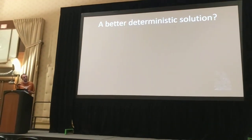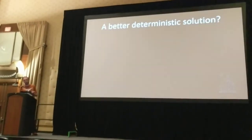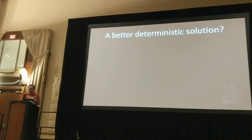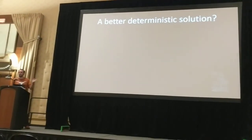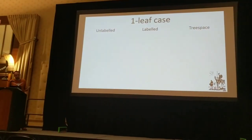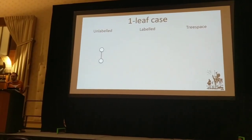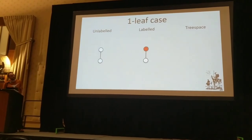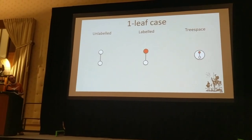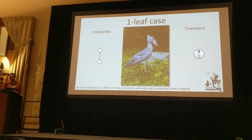So the question I'm interested in is: is there a better deterministic solution? What I mean is that if you can solve it for a certain number of tips, then anyone can use that space regardless of what their organisms or species are. I'm going to start by working through from the simplest case. In the one-leaf case, there's only one way to label that tree, so our tree space is a zero-dimensional point. Congratulations — your tree space is now solved.